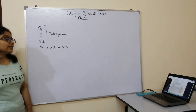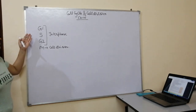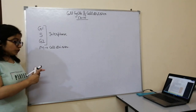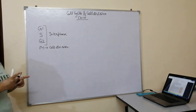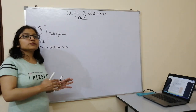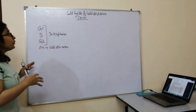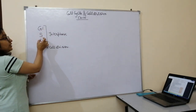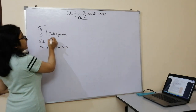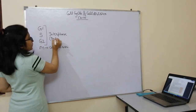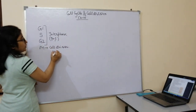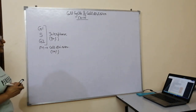We have discussed G1 phase, synthesis phase, G2 phase, M phase, and the structure of DNA, chromosomes, and the genome. G1, S, and G2 phases together constitute interphase, in which cells spend about 90% of their time, while actual cell division takes only about 10% of the time.